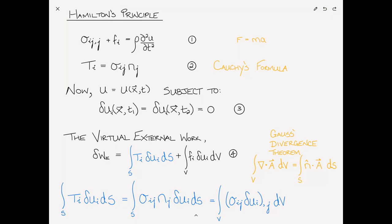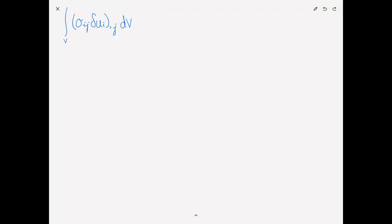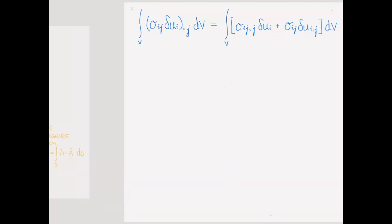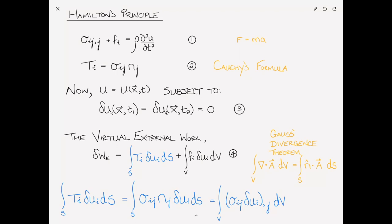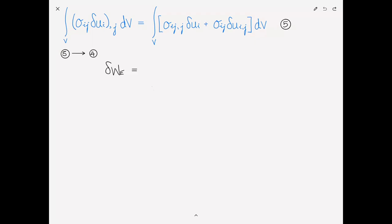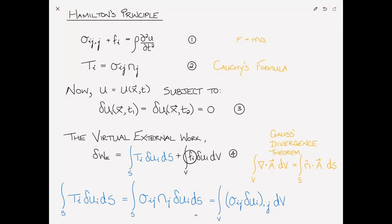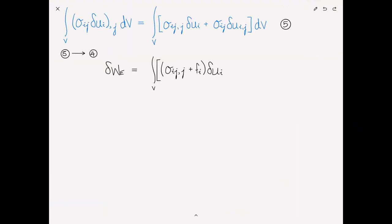So, let me complete the rest of this on the following page. The integral over the volume of sigma ij del Ui comma j dv can be expanded as the integral over the volume of, and then using the product rule, is sigma ij comma j times del Ui plus the derivative of del Ui, so sigma ij del Ui comma j dv. Let's give this a number, number 5, and then substituting number 5 into number 4, we can rewrite the external virtual work as the integral over the volume of, and then I'm going to group these two terms, the sigma ij comma j from here, and the fi from here, both of them multiplied del Ui, plus this term over here, sigma ij del Ui comma j, dv.